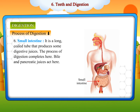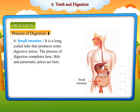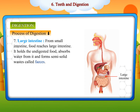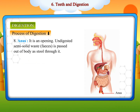The small intestine is a long coiled tube that produces digestive juices. The process of digestion completes here, where bile and pancreatic juices also act. From the small intestine, food reaches the large intestine, which holds the undigested food, absorbs water from it, and forms semi-solid waste called faeces. Faeces is passed out of the body as stool through the anus.